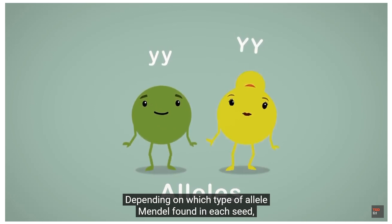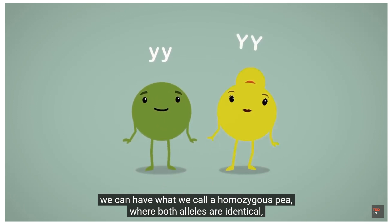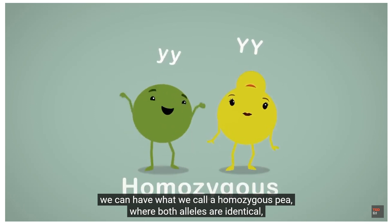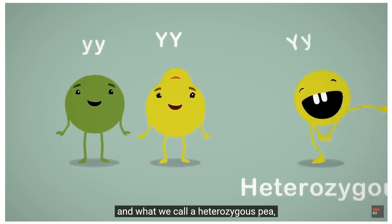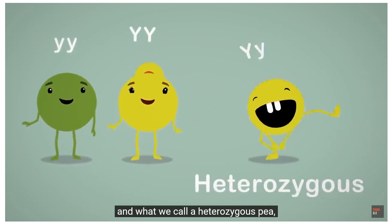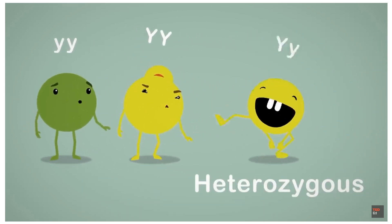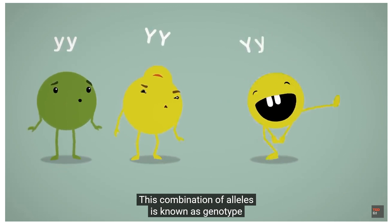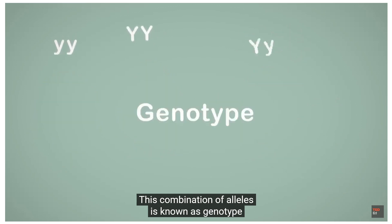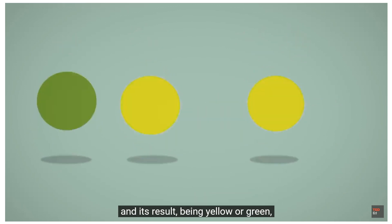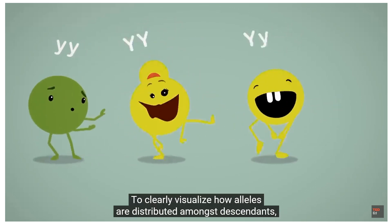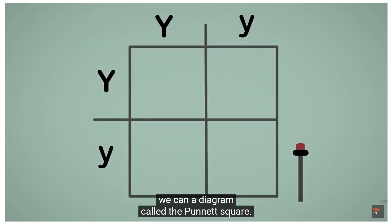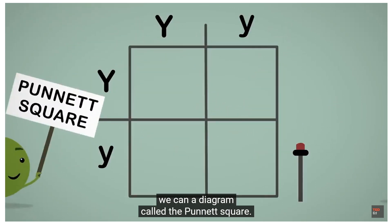Depending on which type of allele is in each seed, we can have a homozygous pea, where both alleles are identical, and a heterozygous pea, where the two alleles are different. This combination of alleles is known as genotype, and its result — being yellow or green — is called phenotype.